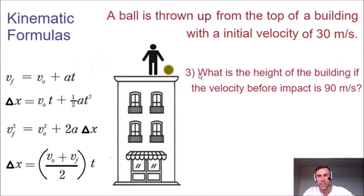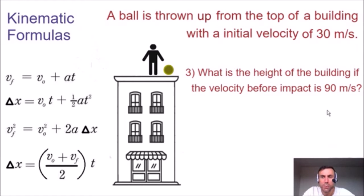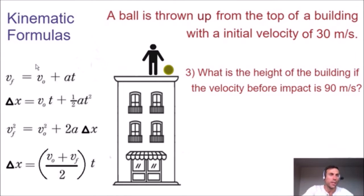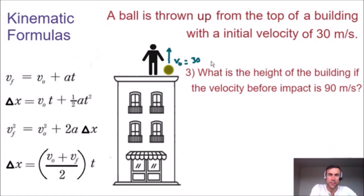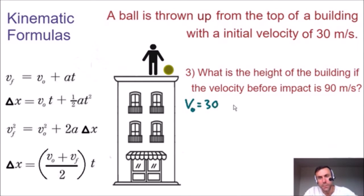Let's answer question number three: what is the height of the building, given that the velocity of the object before impact is 90 meters per second? We're going to use the same kinematics formulas. Notice how all these formulas have four unknowns, and we are given three of those unknowns and need to solve for the fourth. We know the initial velocity of the ball being thrown up is equal to 30 meters per second.